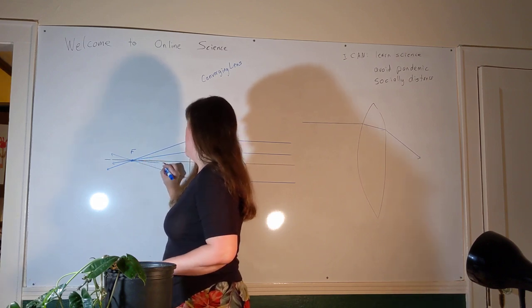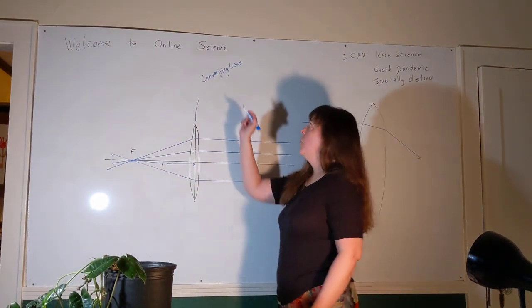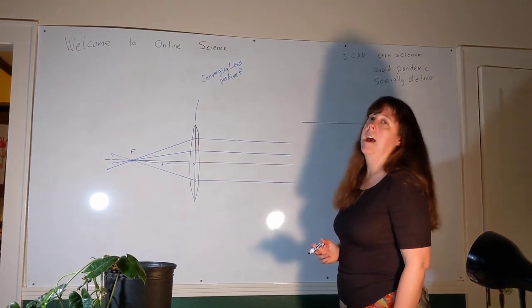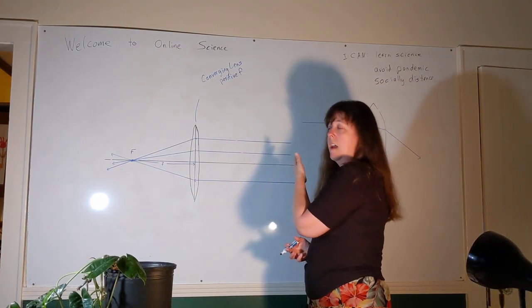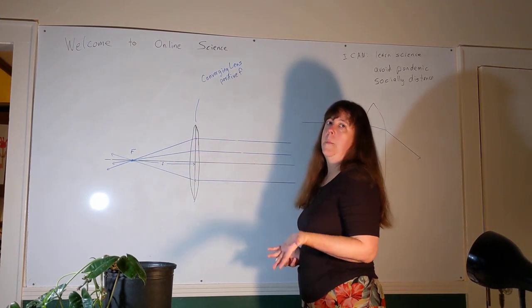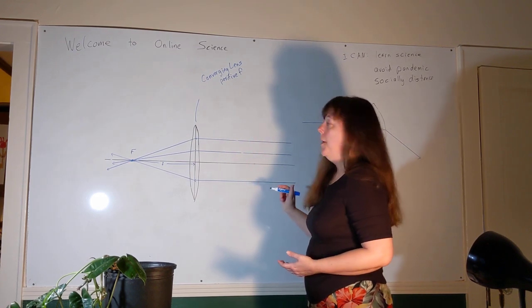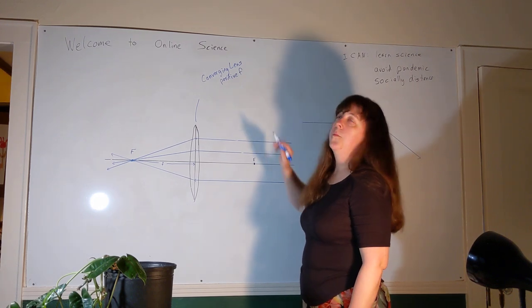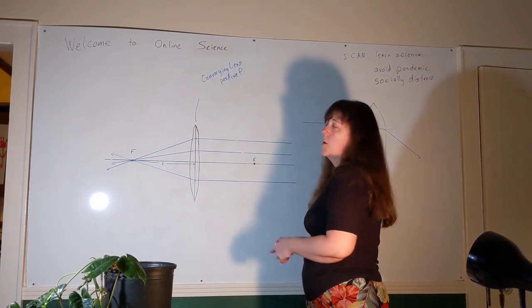That point where all the rays converge is the focal point of the lens, and the distance between the lens and that point is the focal length. A converging lens has a positive focal length; a diverging lens will have a negative focal length. Unlike mirrors, light can travel through a lens in both directions, so each lens actually has two focal points — one on each side — at equal distances from the lens.